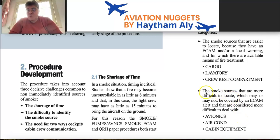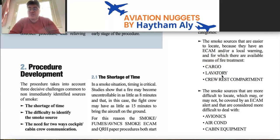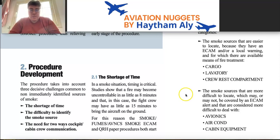The smoke sources that are more difficult to locate may or may not be covered by an ACAM alert. These are avionics, air conditioning, and cabin equipment. Cargo, lavatory, and crew rest compartment are easy to deal with and recognize, whereas avionics, air conditioning, and cabin equipment are difficult to locate and deal with.